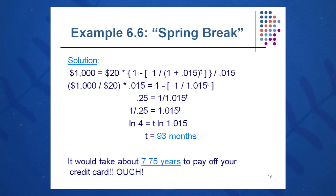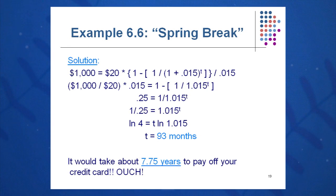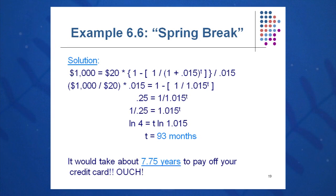Ouch. That's 93 months — 7.75 years to pay off that credit card. So be very careful with your credit card spending. Budget enough money when you go on fabulous vacations, and make sure you understand the interest rate you're paying on that credit card, which in some cases can be very, very high. Again, use the present value annuity formula to calculate mortgage loans, car loans, credit cards, payments, student loans, and so on. Use it to your advantage.